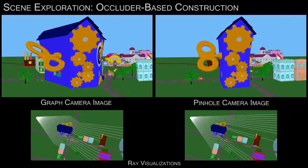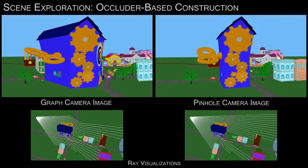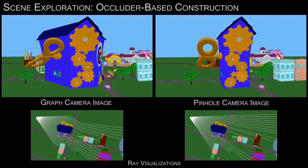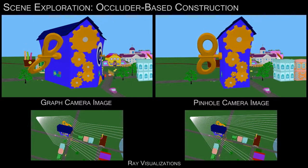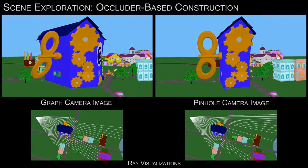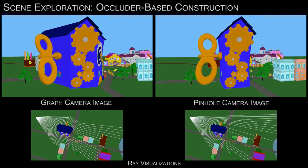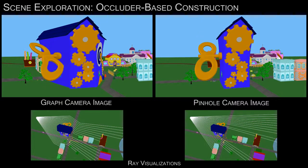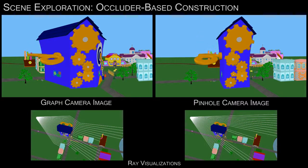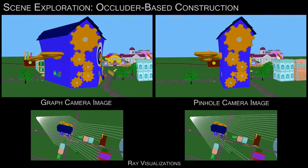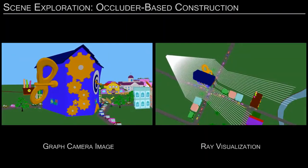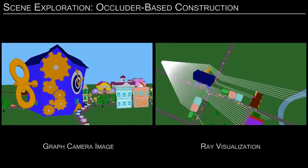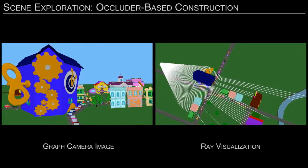Here the graph camera is constructed to shrink the occlusion shadow of the clock store. The graph camera rays reach around the occluder to sample scene regions hidden in the pinhole image. As the user changes the view, the graph camera model is updated to track the occluder.